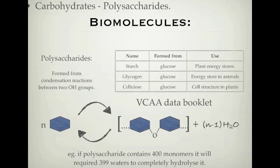A few interesting types of polysaccharides are starch, glycogen, and cellulose — all formed from glucose. Even though they're all made from glucose, they have slightly different roles and structures. You don't need to know the detailed structures, but you do need to know their roles. Starch is used as an energy store in plants, and as an energy source for us — we can eat starch from plants, and plants can also use it themselves.